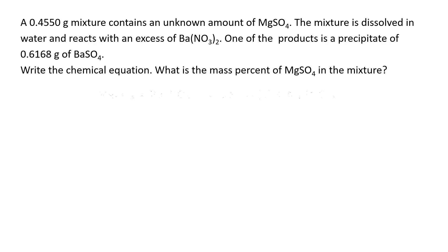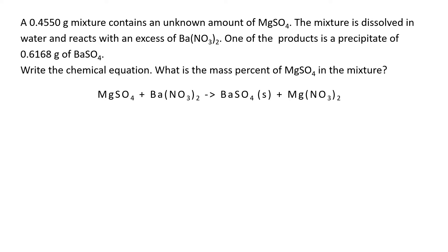Here's an example of a gravimetric analysis word problem. We have a mixture given to us with its mass in grams, and we're told the mixture contains a certain amount of magnesium sulfate. The mixture is dissolved in water and reacted with barium nitrate. One of the products is a precipitate — barium sulfate — and its mass is given to you. You're first asked to write the chemical equation, and then asked what the mass percent of magnesium sulfate is in this mixture.